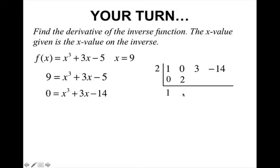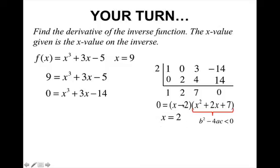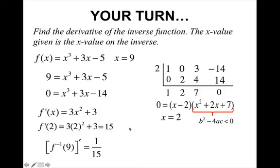Continuing synthetic division — multiply and add to get a remainder of zero, so 2 is a root. Factor the cubic as (x − 2)(x² + 2x + 7). The factor (x − 2) gives x = 2. Using the quadratic formula on x² + 2x + 7 gives a negative discriminant, so those roots are imaginary — we don't worry about imaginary roots in calculus. So we evaluate the derivative at x = 2. Find the derivative of the original function, plug in 2 to get 15, and take the reciprocal: the derivative of f⁻¹ at 9 is 1/15.